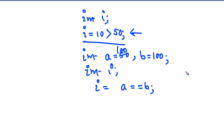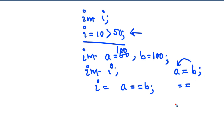Don't confuse the assignment operator with the equality operator. The assignment operator assigns the right-hand operand as the content of the left-hand operand — that is assignment. But equals-equals (==) is the comparison operator; it tests the equality of the operands.